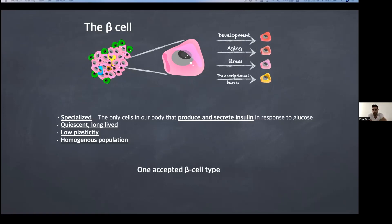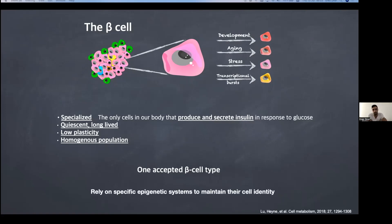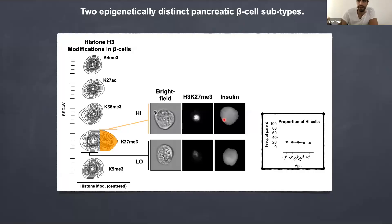There are multiple factors that affect beta cell heterogeneity — either the development of the organism, aging, stress, and of course transcriptional bursts. We have recently also showed that beta cells of the insulin... these are not senescent cells.